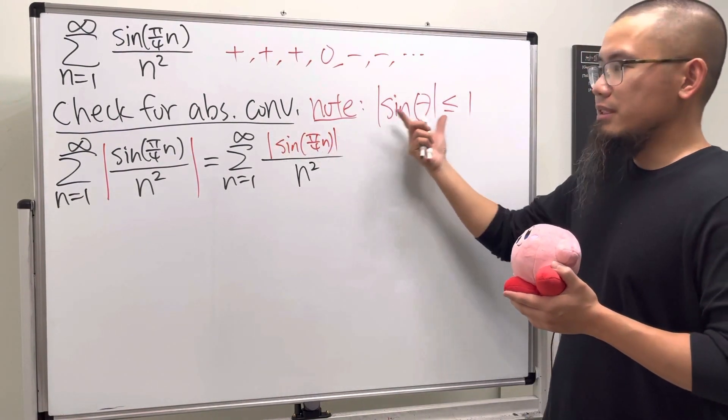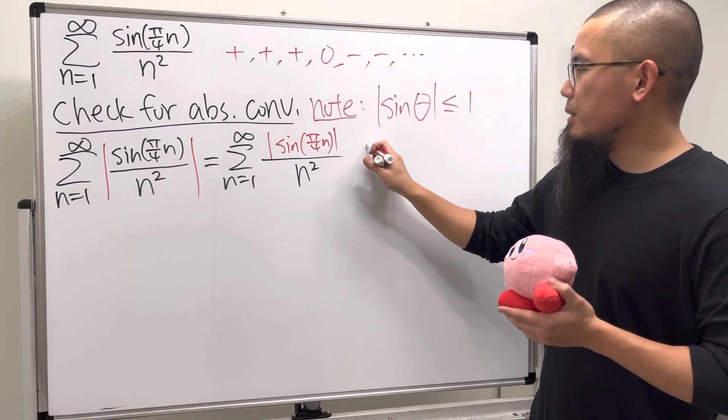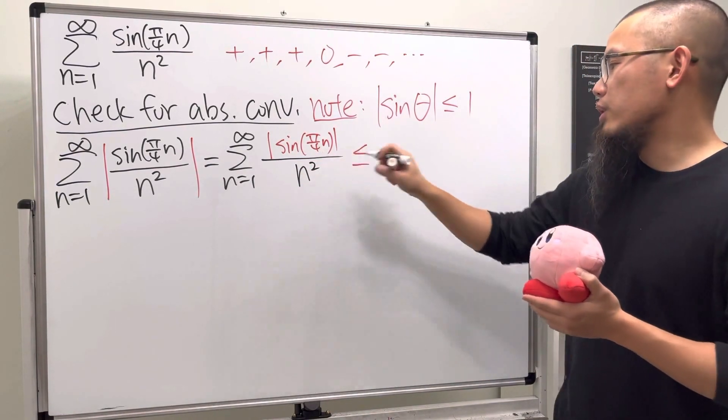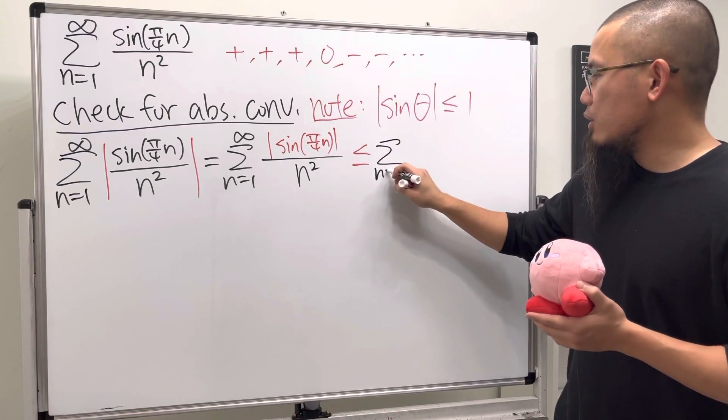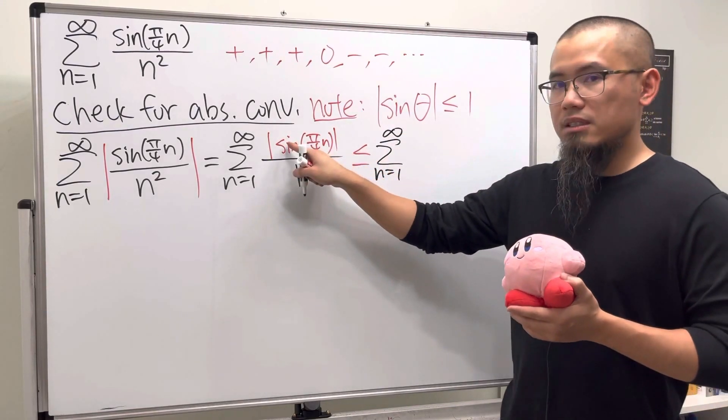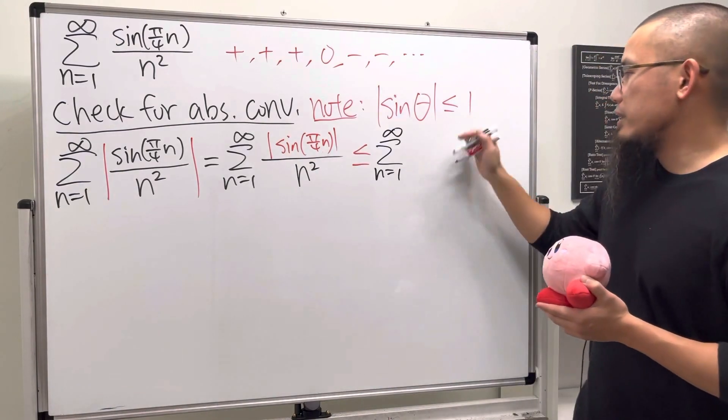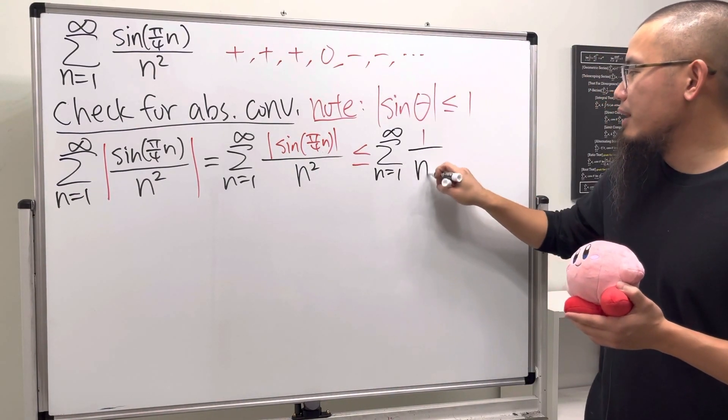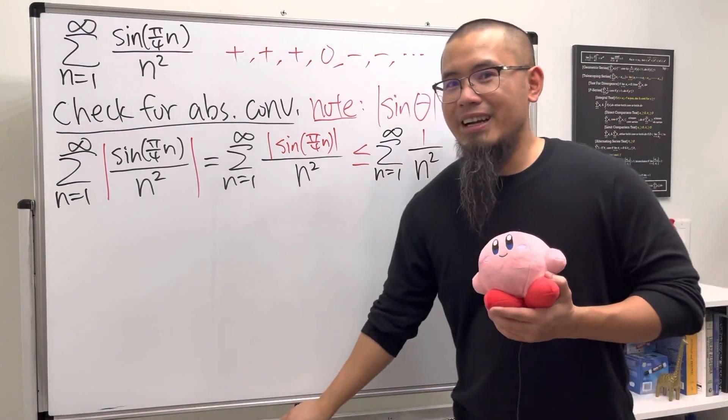Now we have this inequality we can use. We know right away this is going to be less than or equal to the series as n goes from 1 to infinity, and instead of this we can just say 1 over n squared.